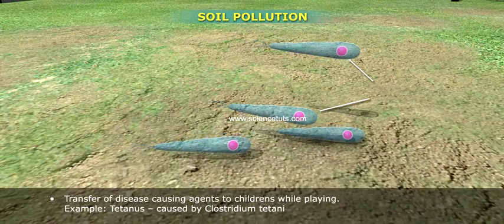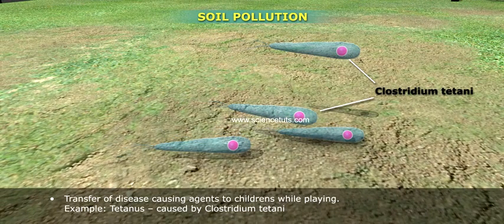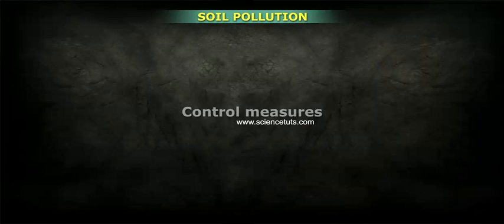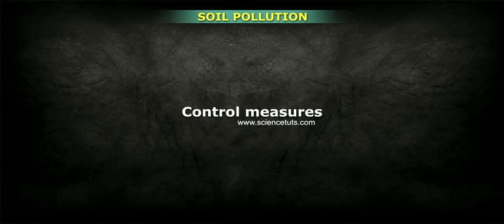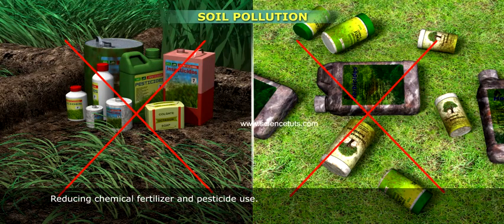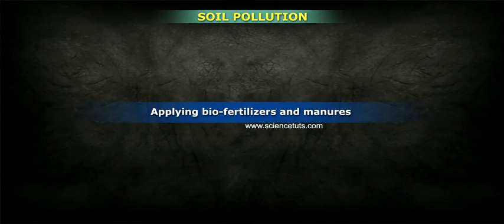Transfer of disease-causing agents to children while playing. Example: Tetanus, caused by Clostridium tetani. Control measures: reducing chemical fertilizer and pesticide use, applying biofertilizers and manures.